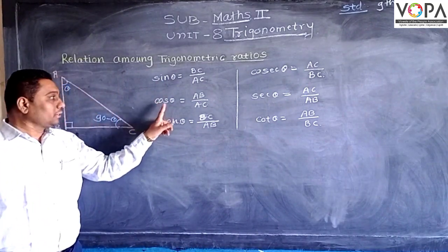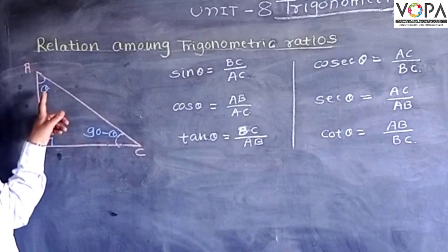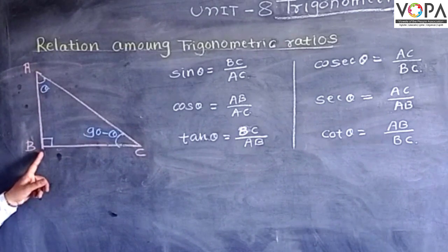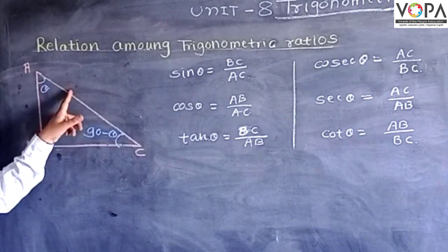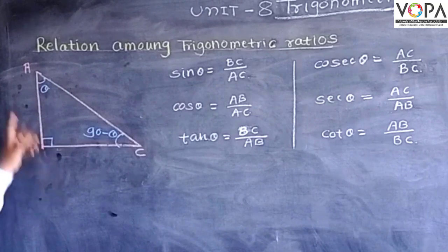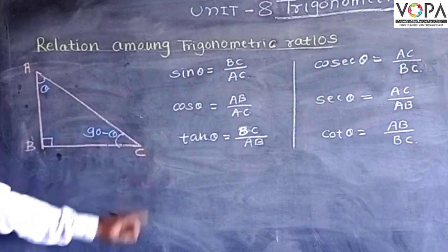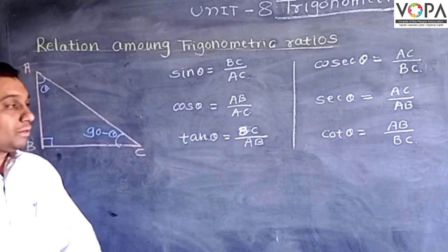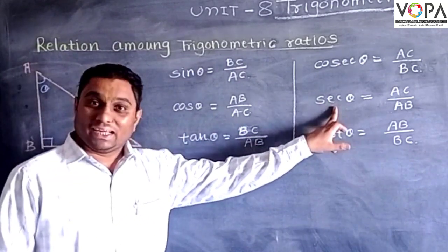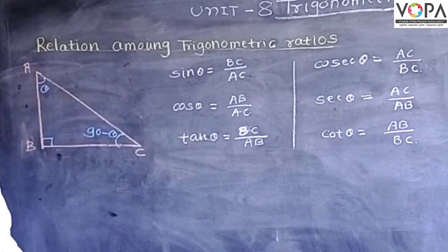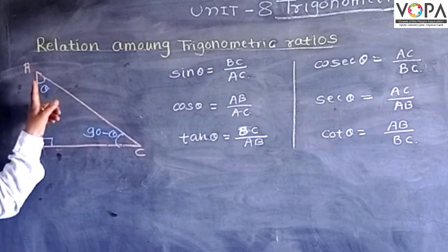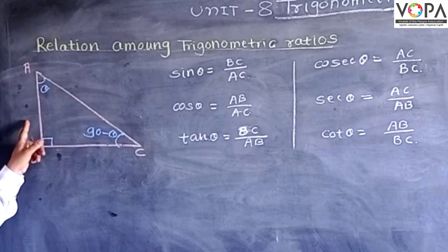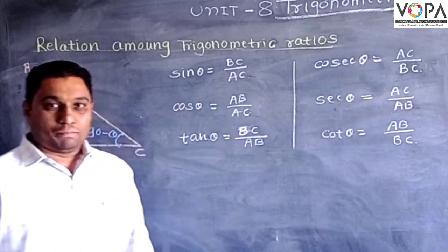The next ratio is cos theta. What is cos theta? AB is the adjacent side, so cos theta is adjacent side upon hypotenuse, that is AB upon AC. And sine theta is hypotenuse upon adjacent side, so AC upon AB.